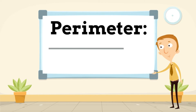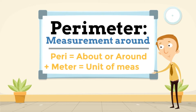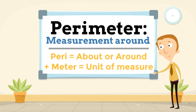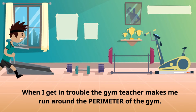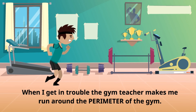Perimeter, meaning measurement around, starts from peri, meaning about or around, plus meter, meaning a unit of measure. When I get in trouble, the gym teacher makes me run around the perimeter of the gym.